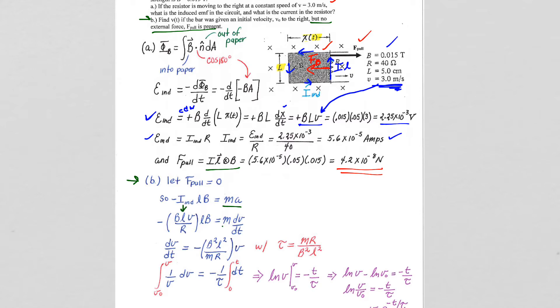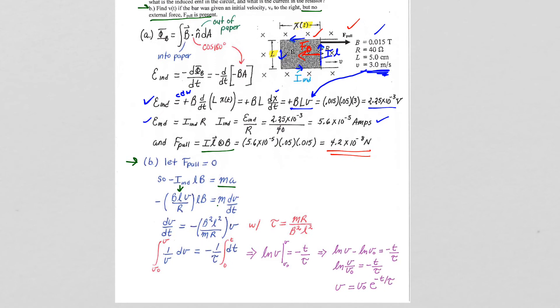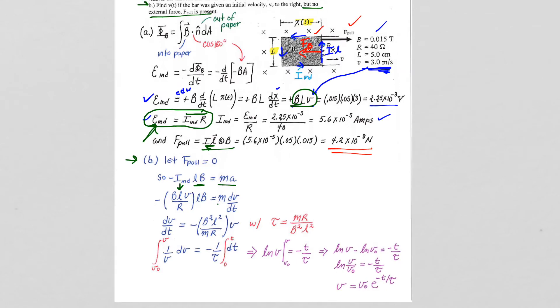The IL cross B equals MA equals M dV dt. We plug in for the current BLV on R, as we did before, right? We have BLV on R comes from this equation, right? So here we have the induced EMF is BLV, so the induced EMF is BLV equals IR. When we solve for I, we get BLV on R, and the LB comes from our LB that is in our force equation. So here we have our differential equation.